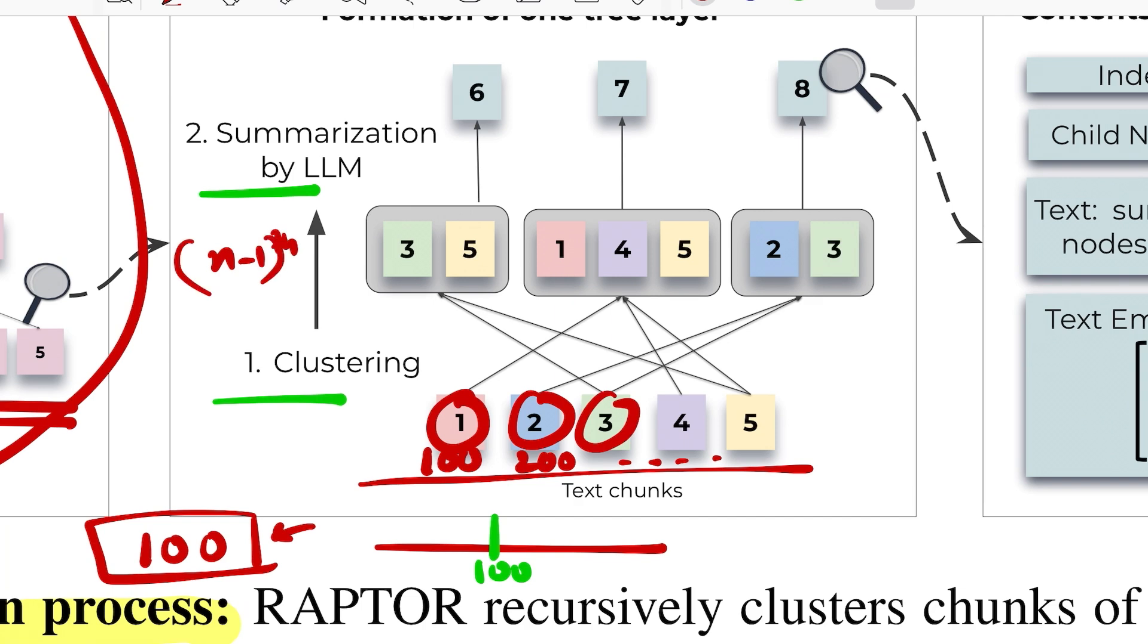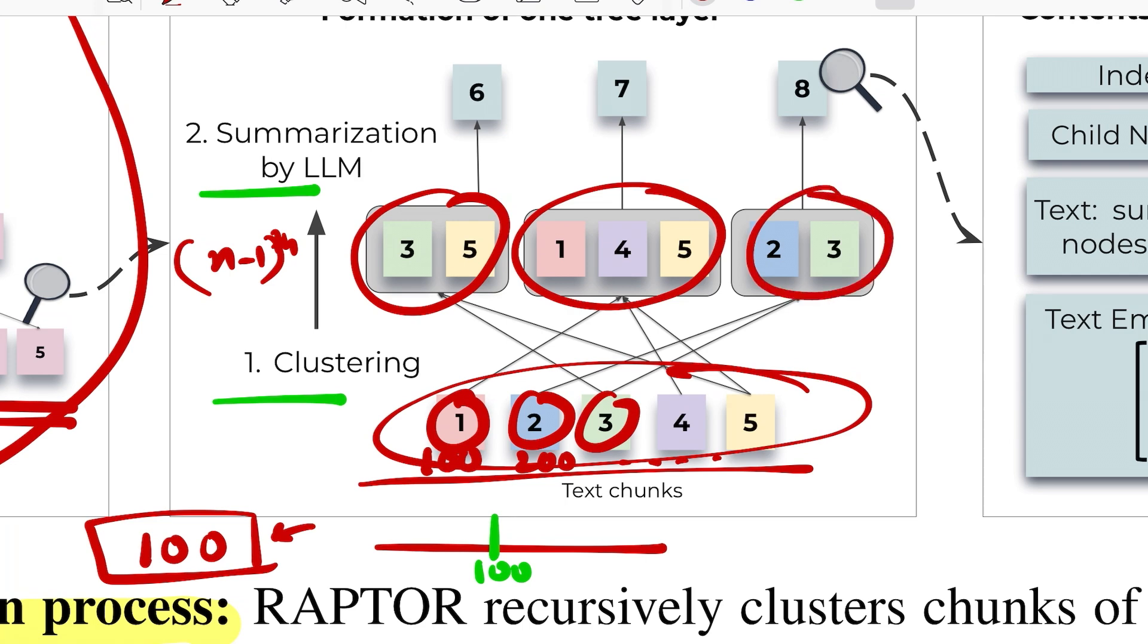So once these chunks are created, the idea is to create the n-1 layer. So for this they apply clustering over these chunks, and now this clustering is soft clustering as we saw. You can share the leaf level nodes to multiple previous level nodes. So the intuition is that these nodes are essentially talking about similar or complementing themes, so we can represent them using a single node.